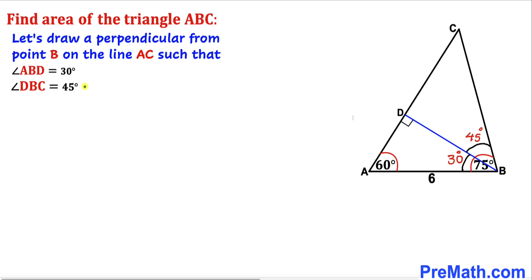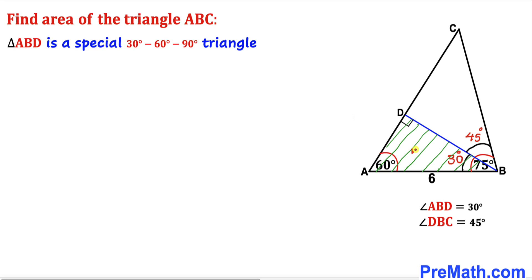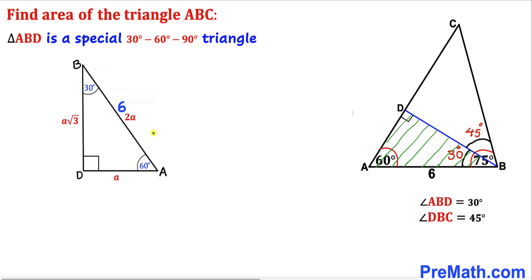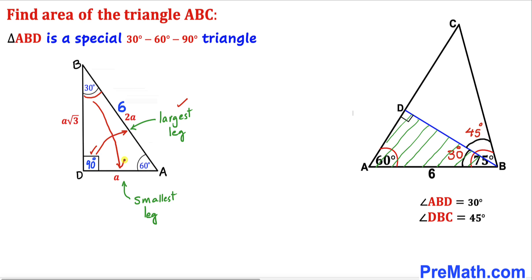Therefore angle DBC is 45 degrees. Now let's focus on triangle ABD. We know that this is a special 30-60-90 triangle. Here I have copied down this right triangle ABD. We can see that 90 degrees is our largest angle, so the side opposite to it is going to be our largest leg. The smallest angle is 30 degrees, so the side opposite to that is going to be our smallest leg.